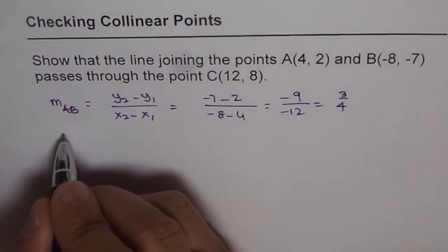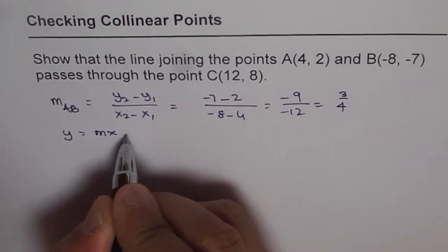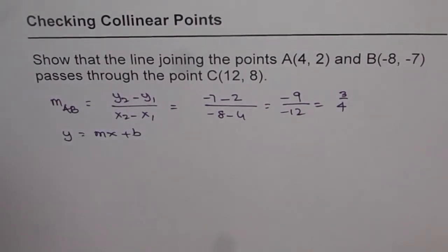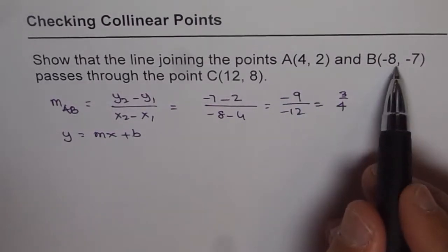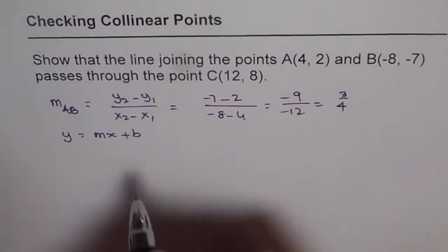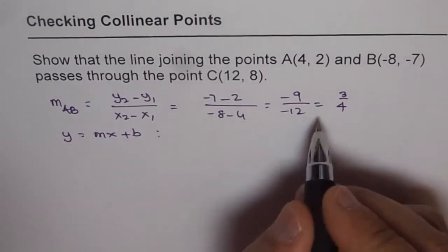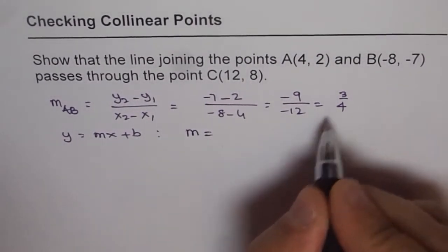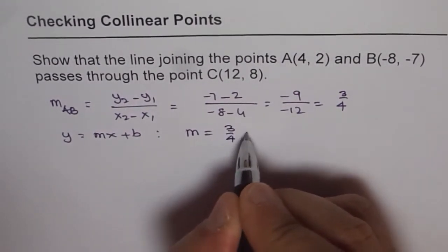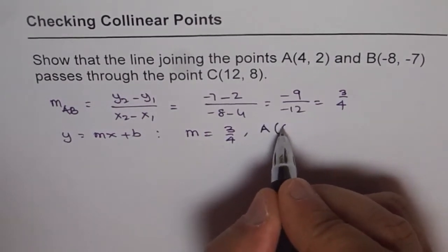Now to find the equation of the line, which is y equals mx plus b, what we can do is use any one of these points. So let's use A as our point. For this, we have slope equals 3/4, and we know the point is (4, 2).